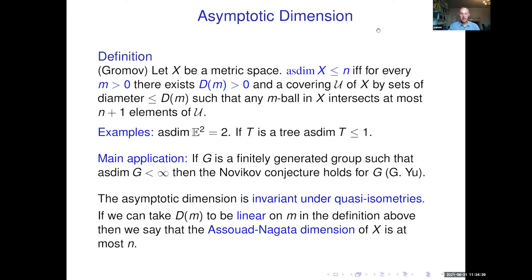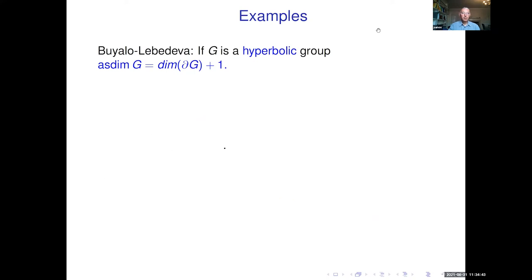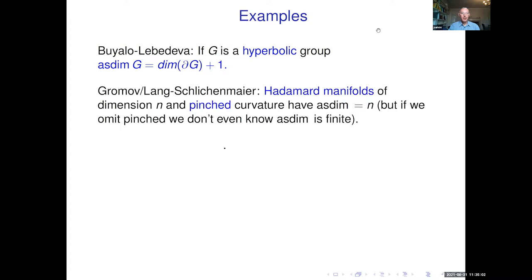The most important result, perhaps, is by Biao-Lebedeva: if G is a hyperbolic group, then we can give an exact formula for the asymptotic dimension — it equals the topological dimension of the boundary plus one. So for hyperbolic groups we can calculate the asymptotic dimension exactly.